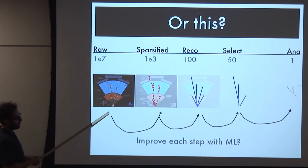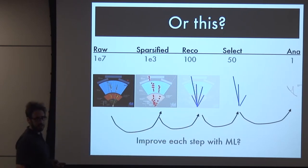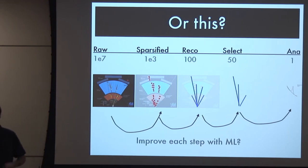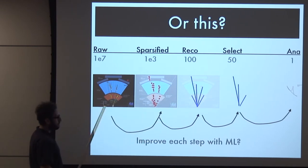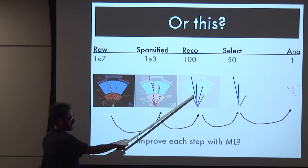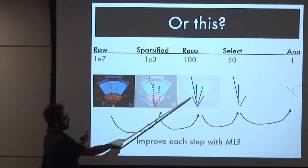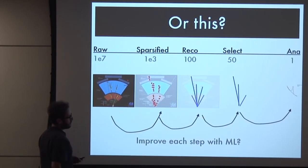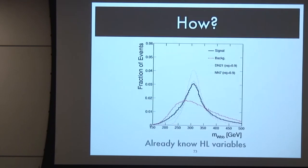A better approach might be to say these are recognizable touchstones - we want to use our physics understanding. We want to understand what we're doing. What would a paper claiming a machine-learning-only discovery even look like? Probably nobody would believe it. It's more reasonable to improve each step with machine learning - better reconstruction, better calibration against known sources. Each step might be improved with machine learning rather than skipping the entire analysis chain at once. The deep question is: what is it learning, how is it making improvements?